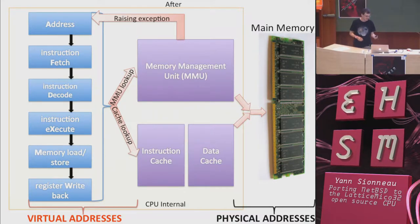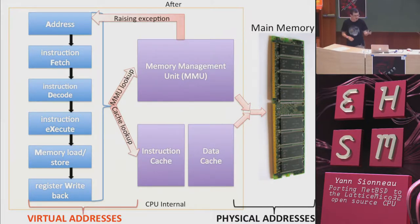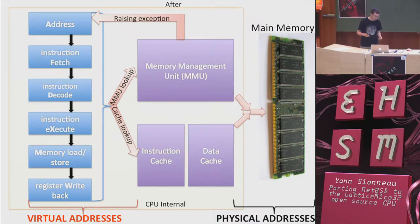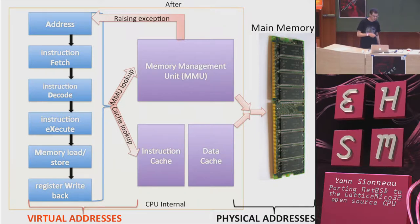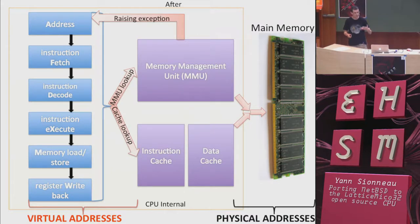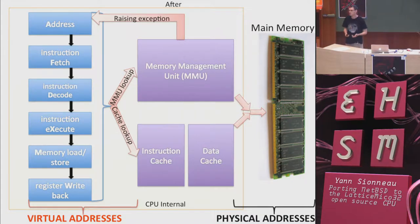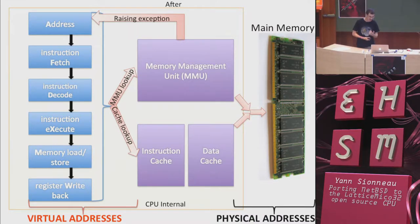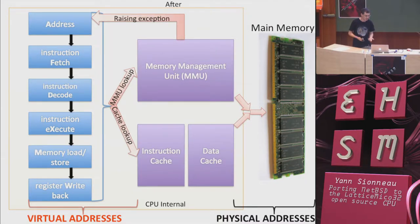With the MMU added, the pipeline on the left only manipulates virtual addresses — they never directly access main memory. Instead, you perform an MMU lookup: feed the virtual address to the memory management unit, it translates it into a physical address, and then that physical address goes out to main memory. That's the modification needed to allow the CPU to run a modern operating system.